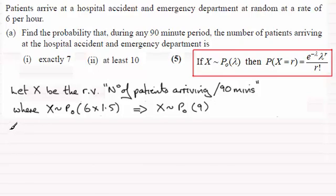So in order to answer part two here, the probability that at least 10 arrive, we've got the probability that X is greater than or equal to 10.